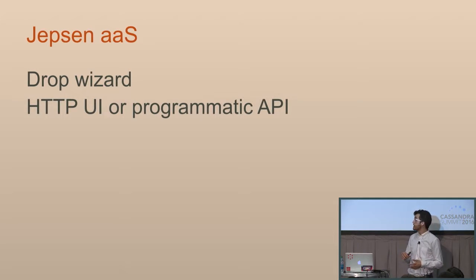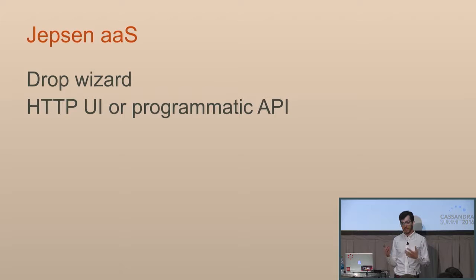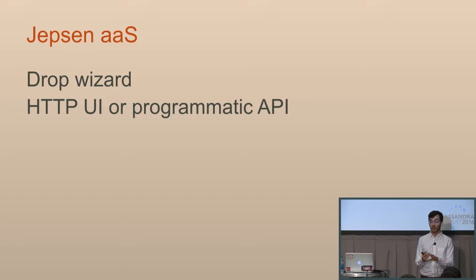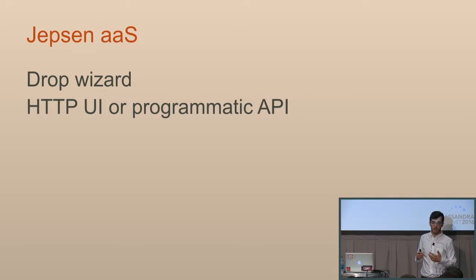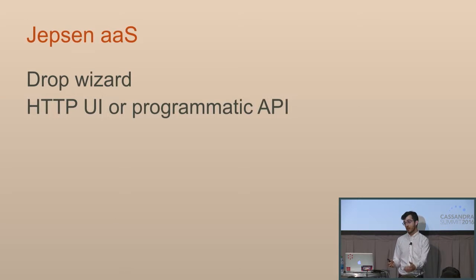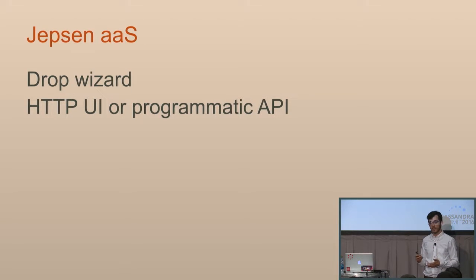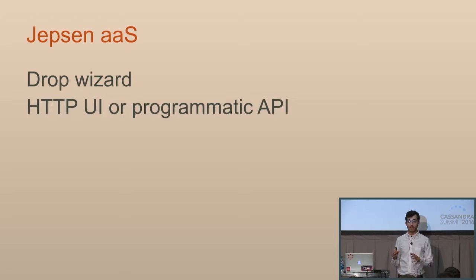Fallout is written in Java using Dropwizard, a Java framework for building web services. We have an HTTP GUI and a programmatic API from which you can trigger Jepsen tests without ever knowing Jepsen's architecture or writing a single line of Clojure. This is a closed-source tool we use internally at DataStax to test open-source Cassandra and file bugs to the open-source Jira, allowing our Python-based test engineers to not need to know Clojure.